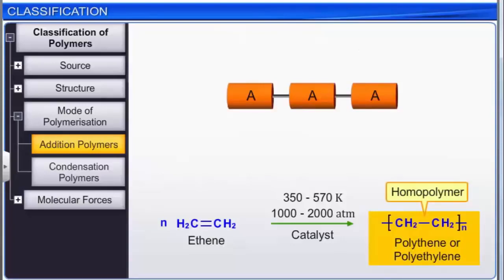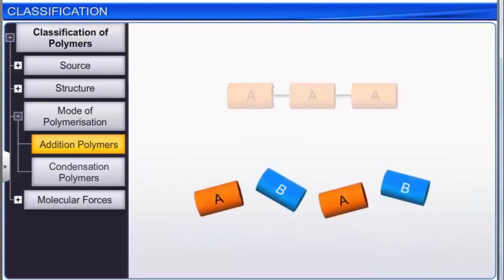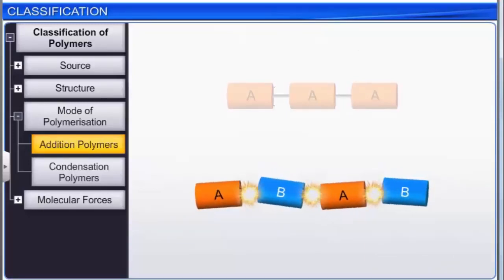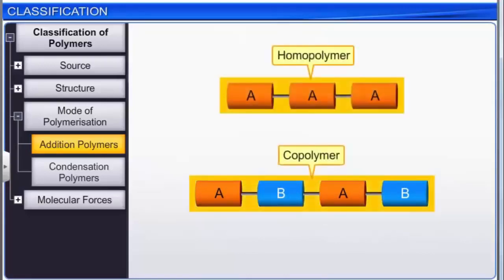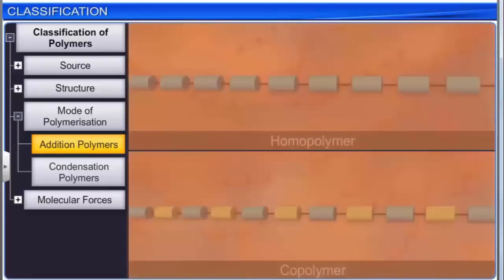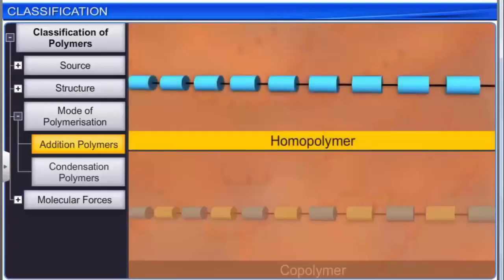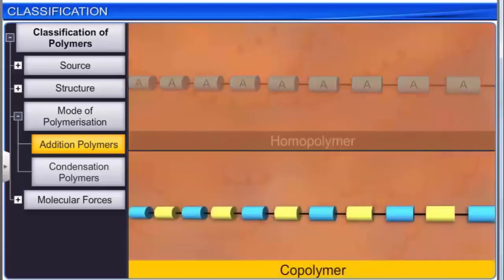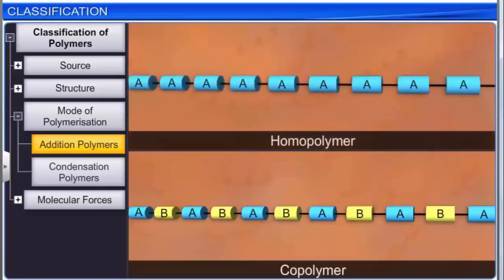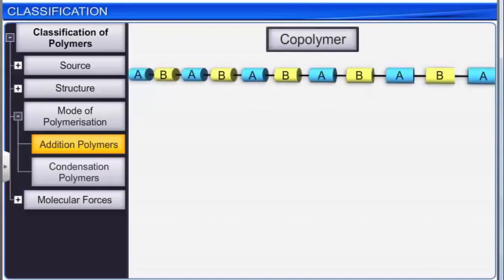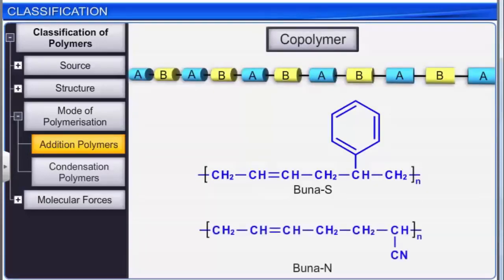In contrast to homopolymers, copolymers are obtained by the addition polymerization of two different monomers. Simple models illustrate the difference: identical monomer units polymerize into a straight chain homopolymer, while a copolymer has a repeating AB pattern. Two important examples of copolymers are Buna-S and Buna-N.